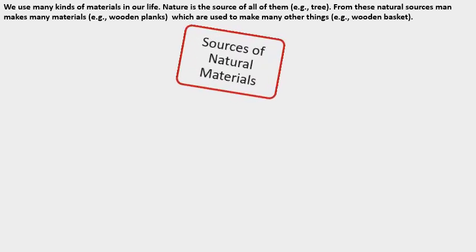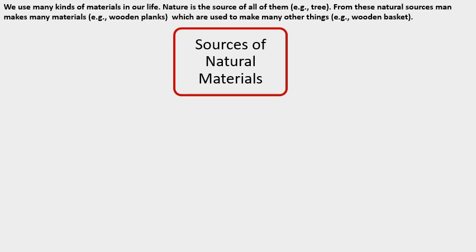We use many kinds of materials in our life. Nature is the source of all of these materials. From these natural sources man makes many other materials which are used to make many other things like wooden baskets. So from a natural source like tree, the man can make wooden planks and from that we can make wooden baskets. Now sources of natural materials.